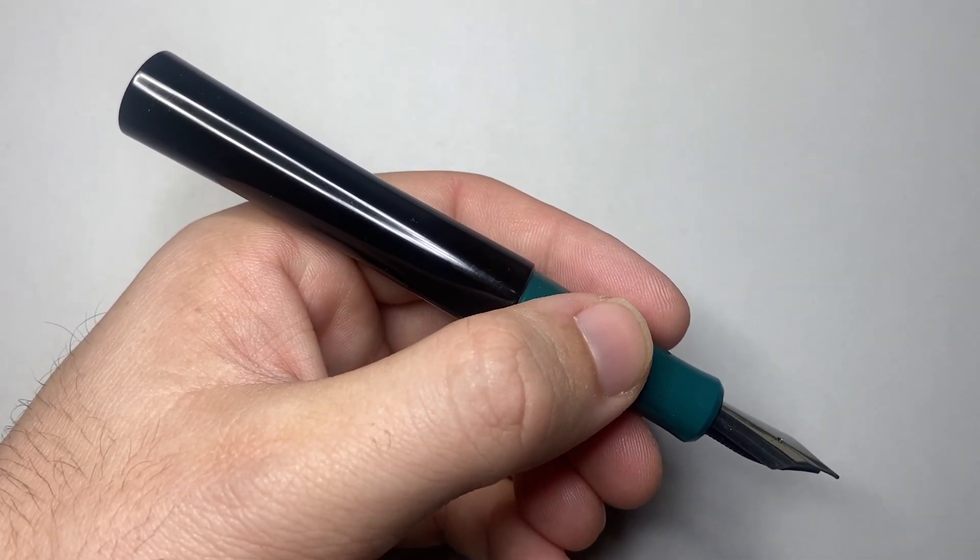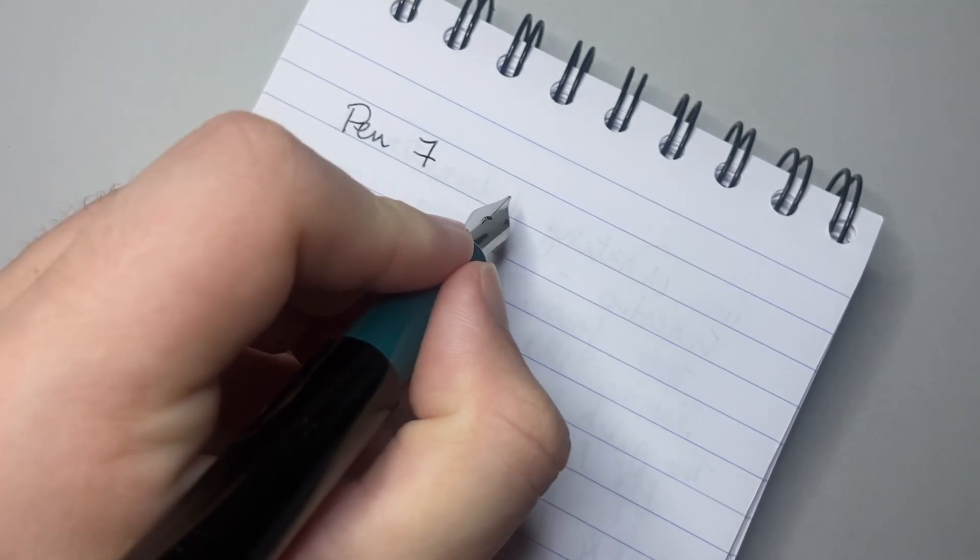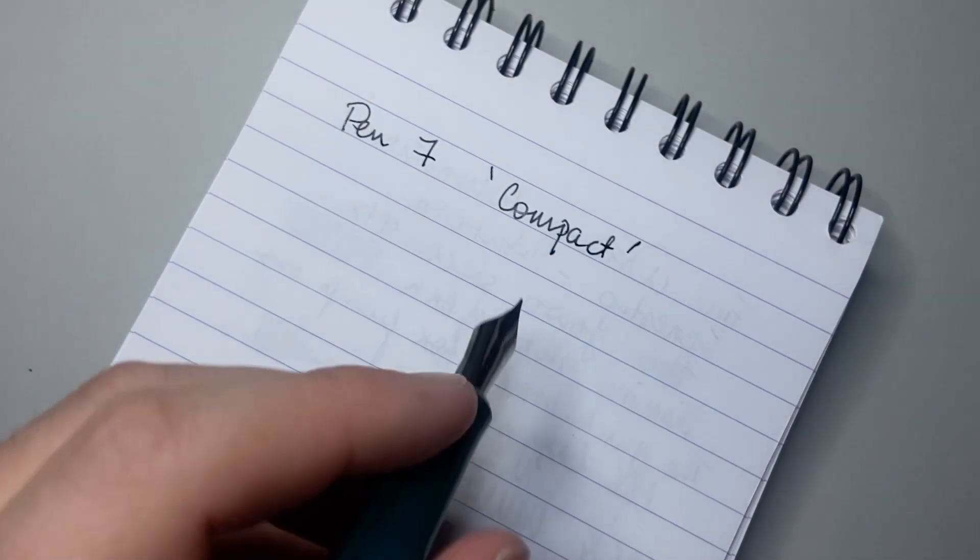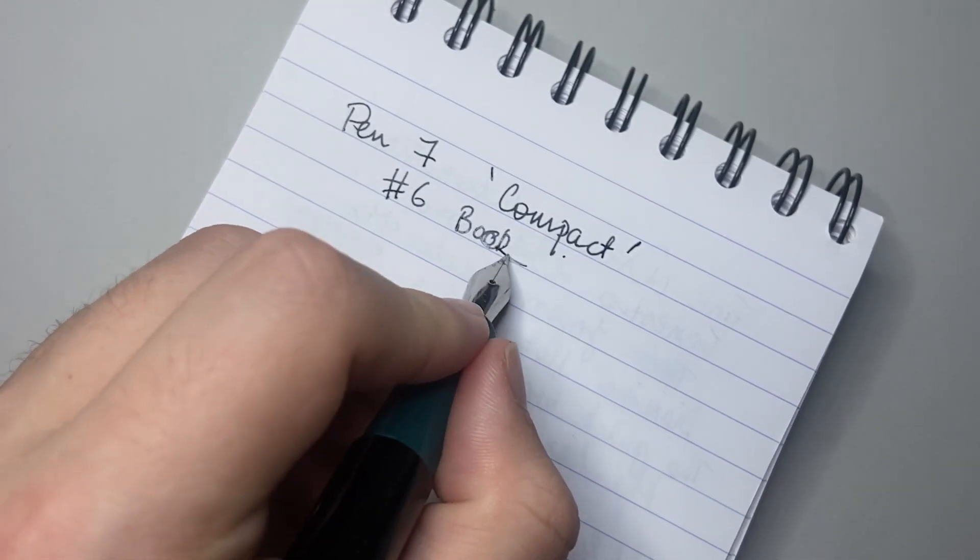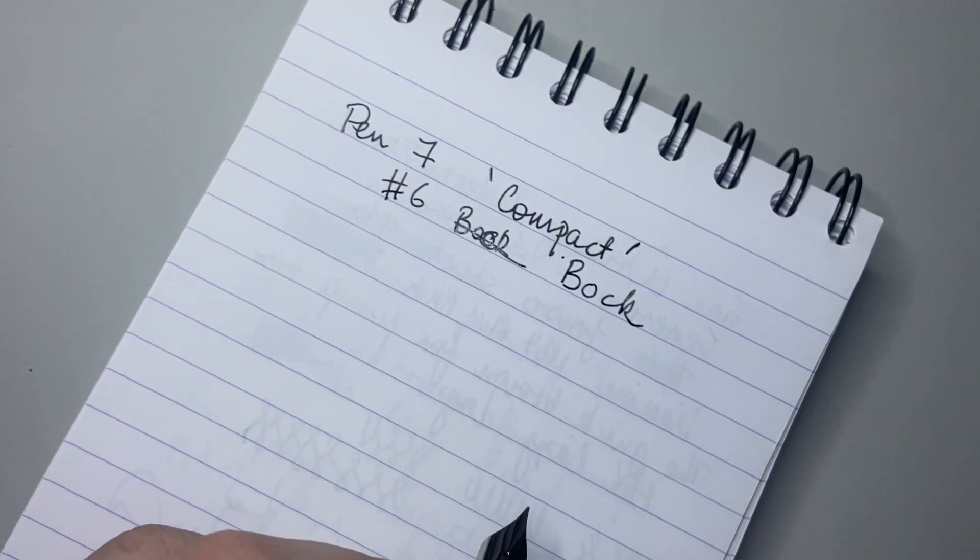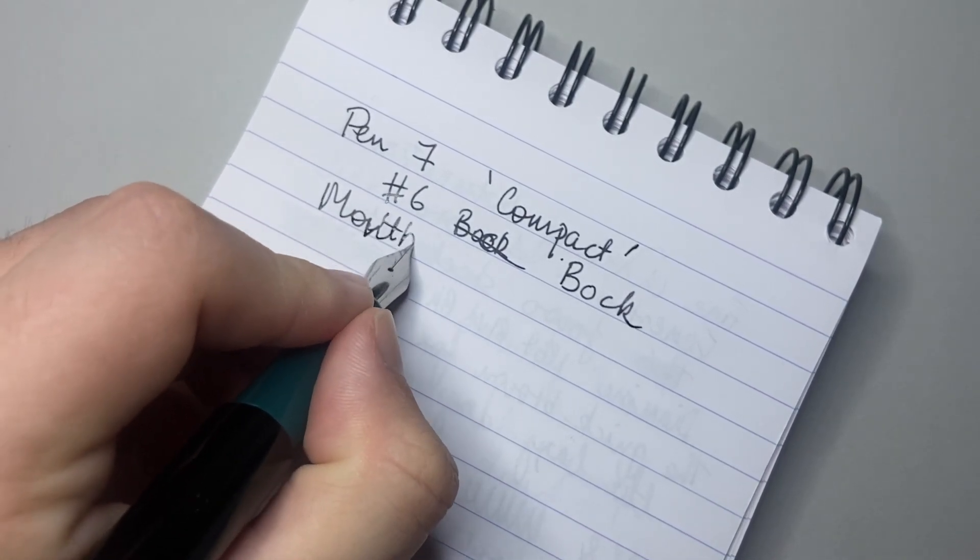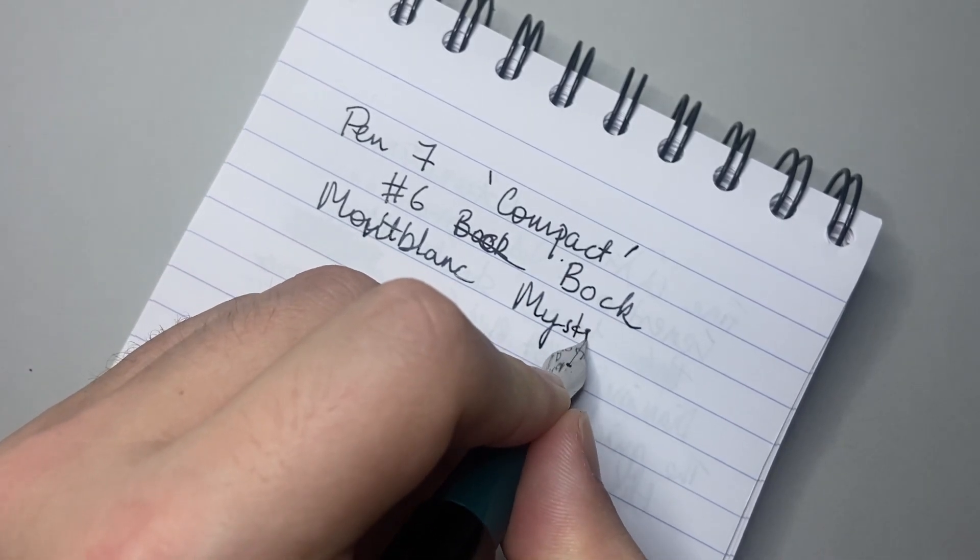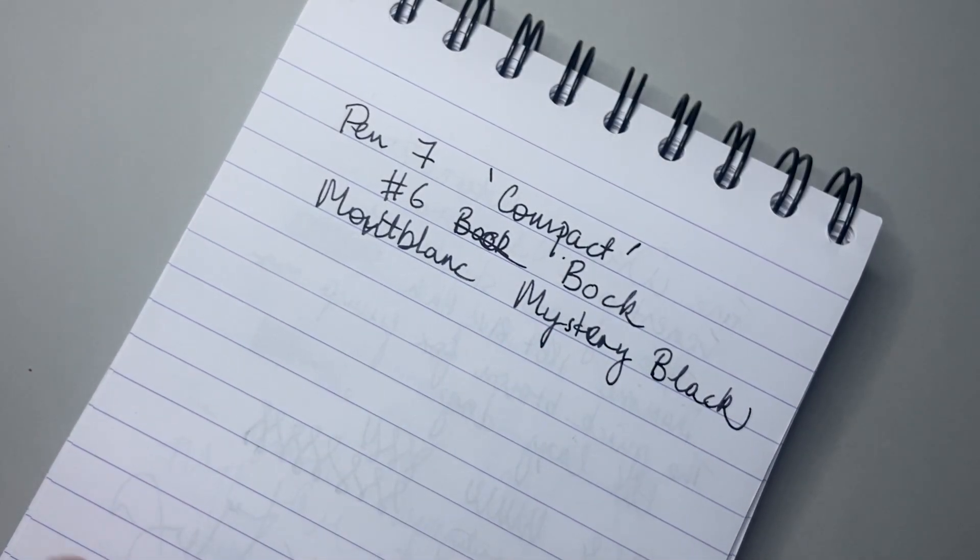Speaking of how this pen writes, let's do a writing sample. We have the Pen 7, for the moment I'm still going to call this the compact fountain pen, with a number 6 Bock nib, steel Bock B-O-C-K. The ink in this is Montblanc Mystery Black.